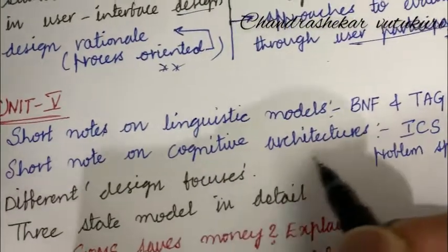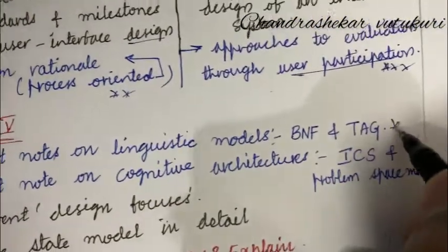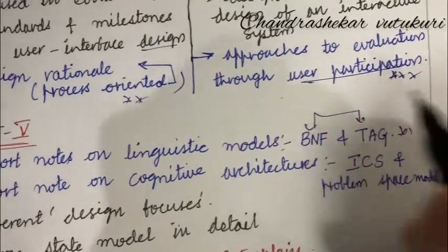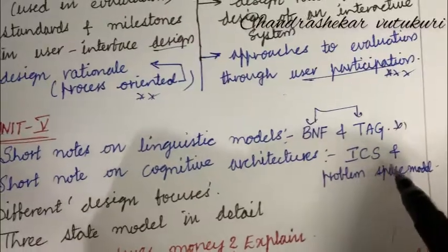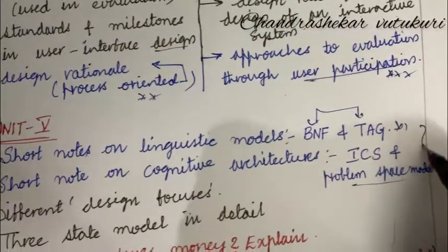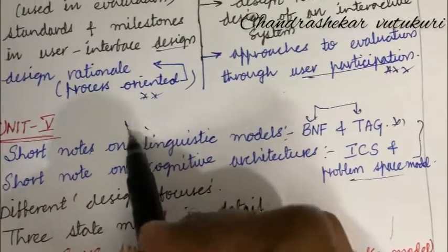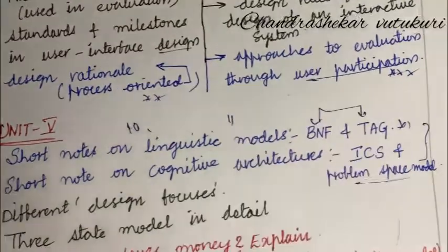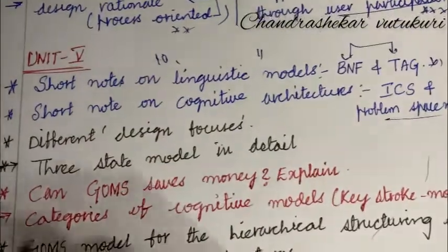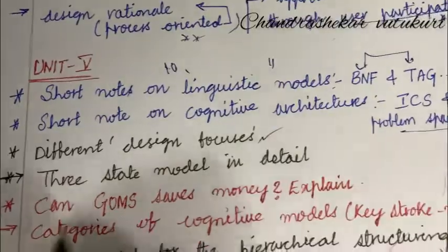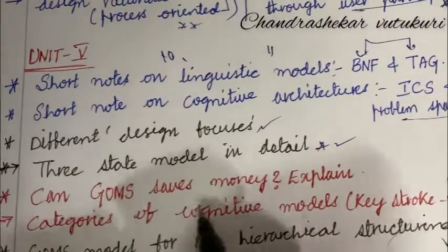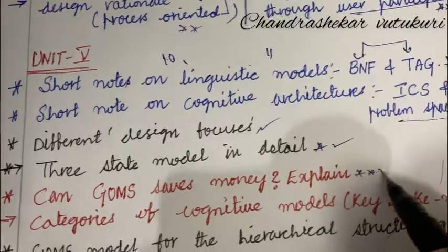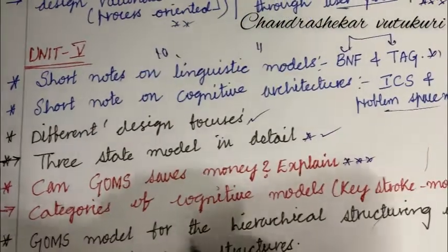The unit 5 is all about short notes on linguistic models, BNF and TAG and their differences may be one of the very highlighted questions this time. Short notes on cognitive architectures, I mean ICS and the problem space model. From these two, you are going to get any one question that may be the 10th question or 11th question this time in the question paper. Different design focuses, explain. Three-state model in detail, explain this term. Can GOMS save money? Explain is also one of the short questions this time. Categories of cognitive models, keystroke model and GOMS model for the hierarchical structuring of user tasks and the goal structure. Such type of questions are also very important.